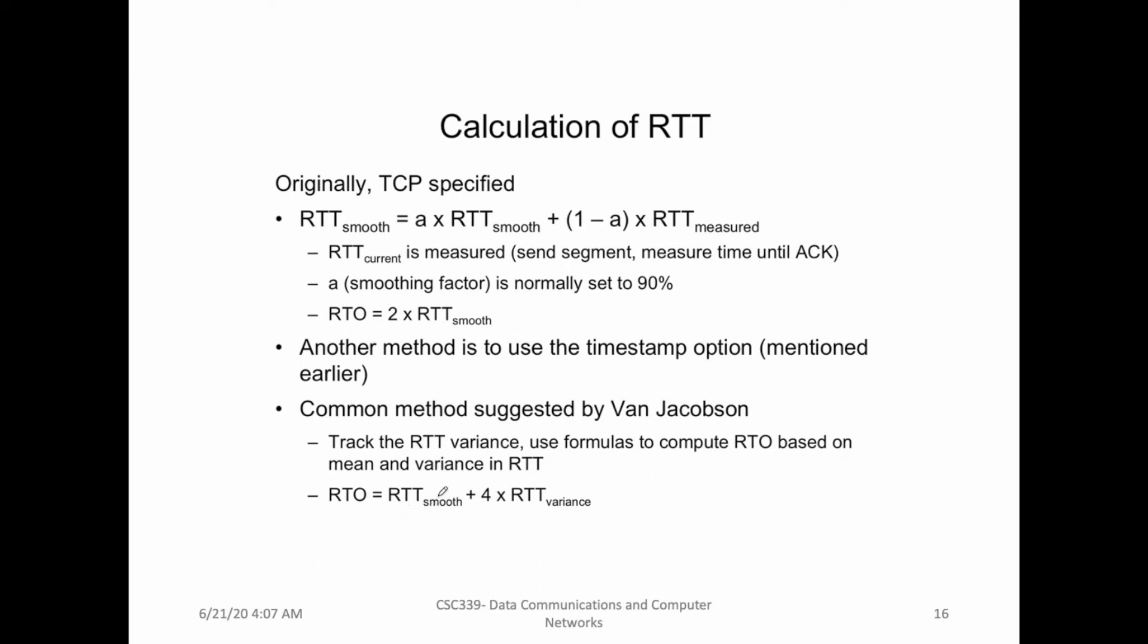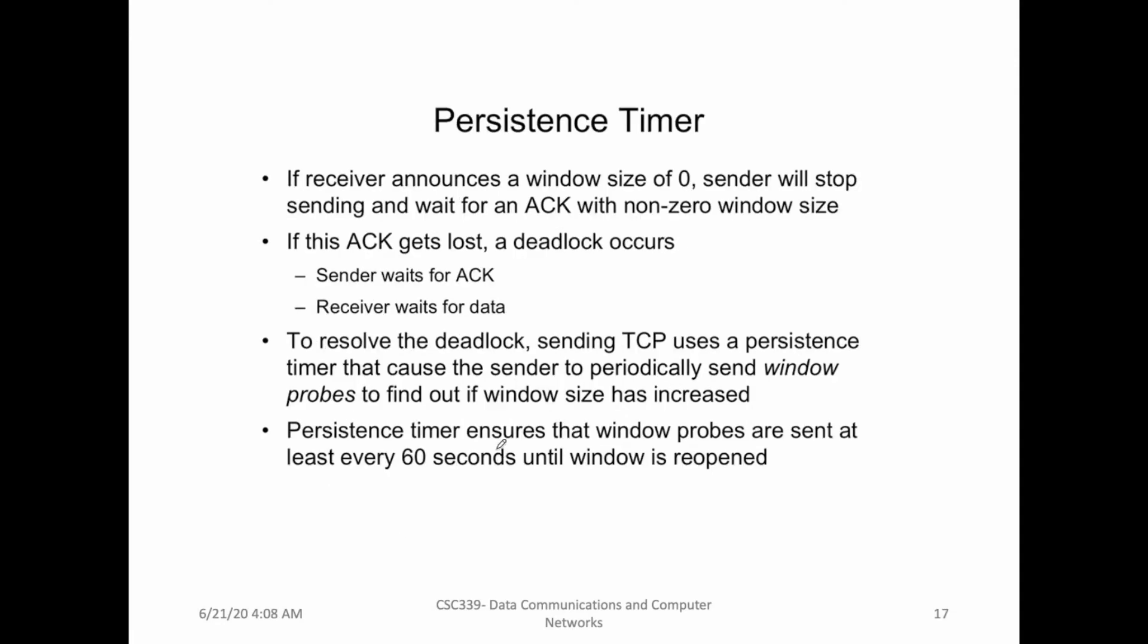The next timer that TCP makes use of is called persistence timer, and this timer we have already covered in the previous lecture because this timer is used by the sender to send a probe message to the receiver machine to see if there's enough space available in the receiver.